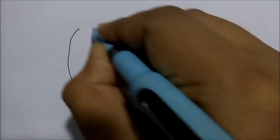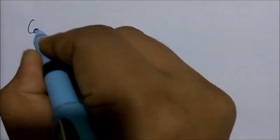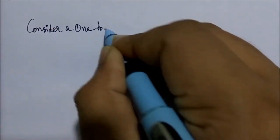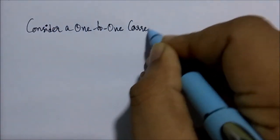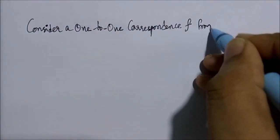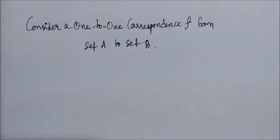Today we are going to talk about what is an inverse of a function. Let's say we have two sets A and B, and consider a one-to-one correspondence or a bijection from set A to set B.